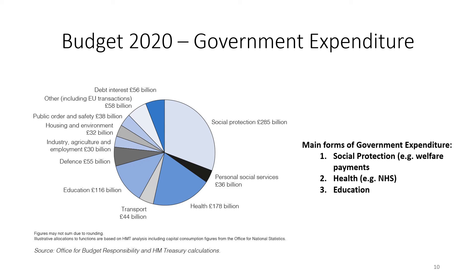We can see from the pie chart that the main forms of government expenditure are social protection — in other words, welfare payments — health, which includes funding the NHS and primary care, and education. Like with government revenue, these trends tend to be long term, so it might be worth remembering the main forms of government expenditure.